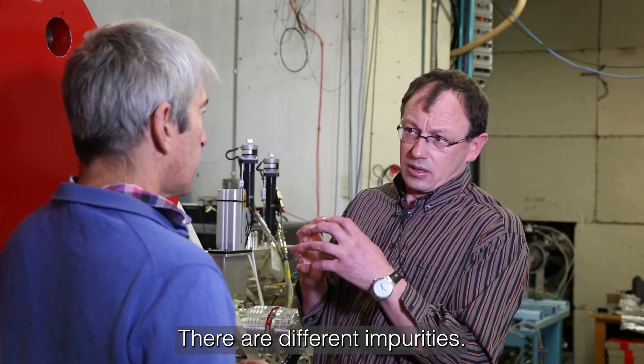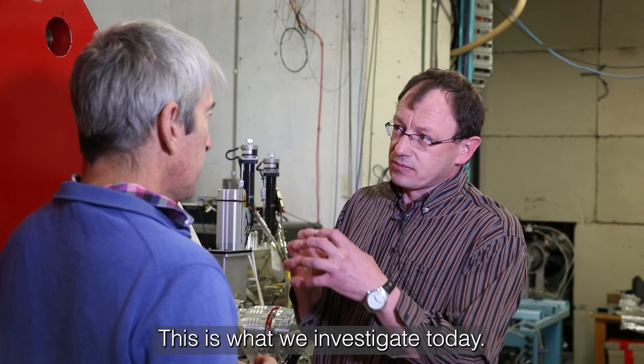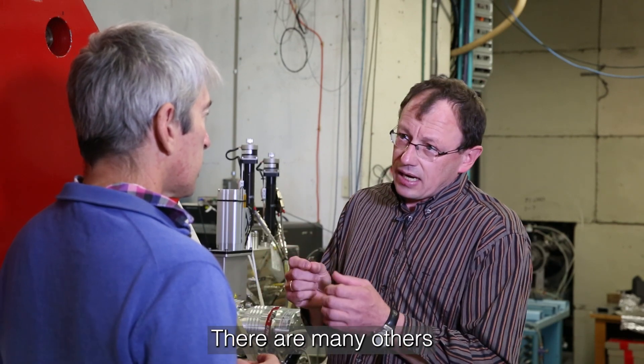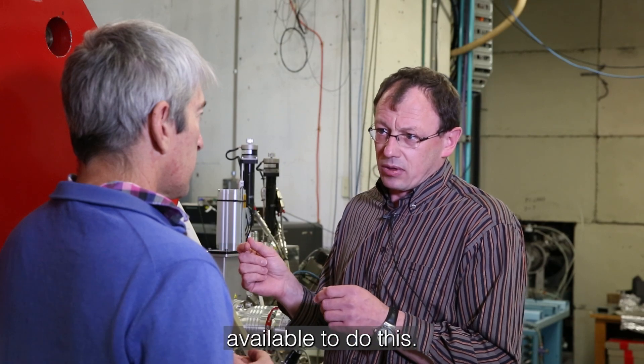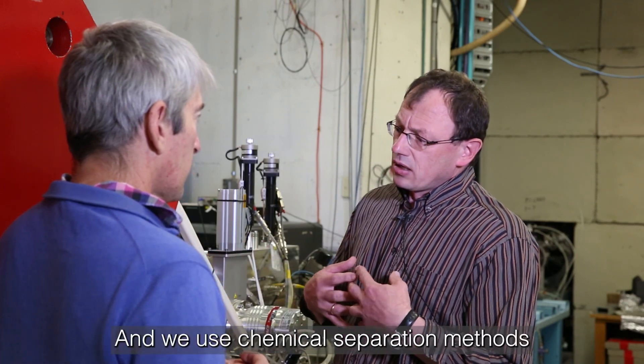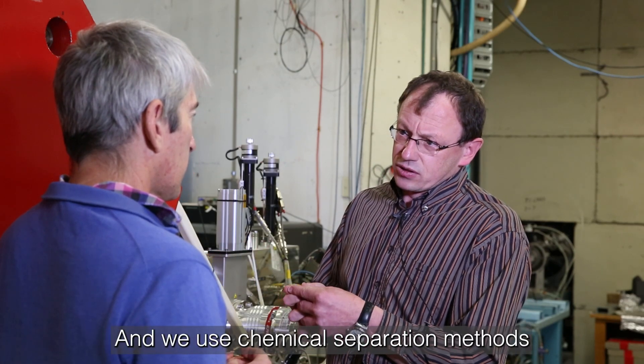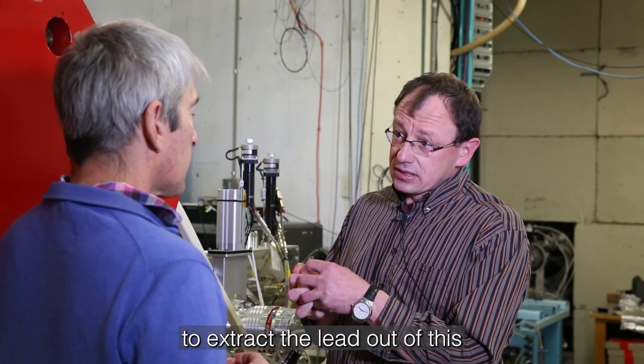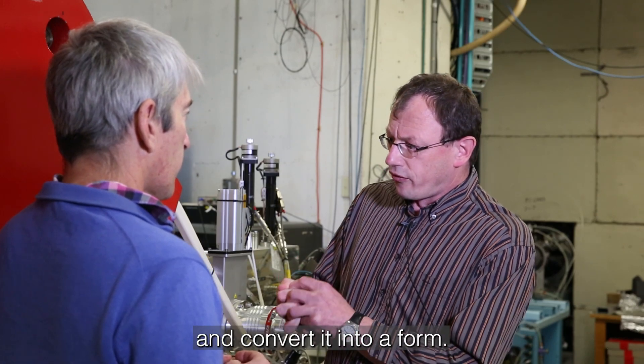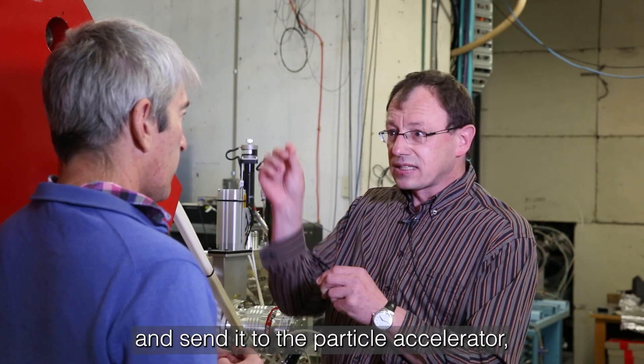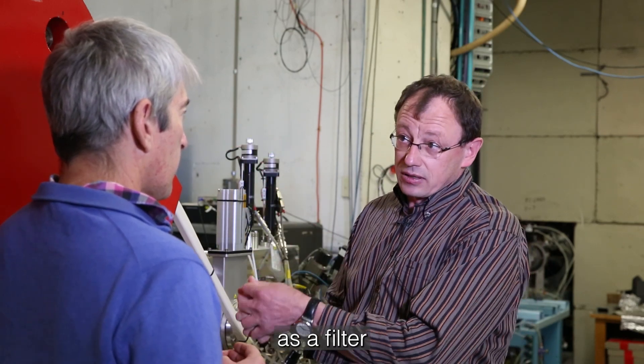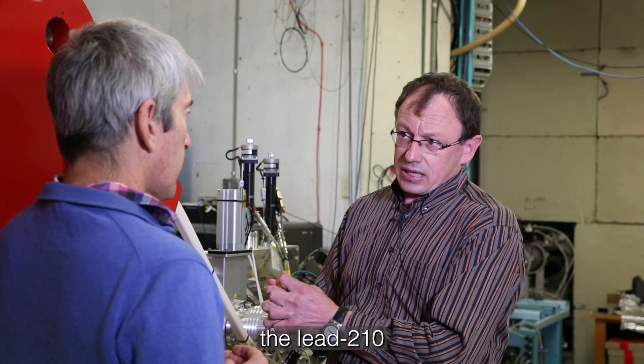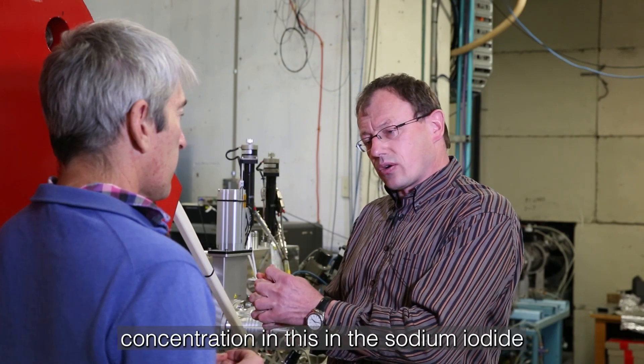There are different impurities, one is lead-210, this is what we investigate today. There are many others which we want to investigate with this technique or other techniques. We use chemical separation methods to extract the lead out of this and convert it into a form, this is a milligram of material, and send it through the particle accelerator and use this accelerator as a filter to identify the lead-210 concentration in the sodium iodide.